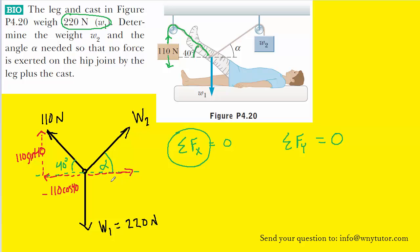The x-component points to the right and would be represented as w2 cosine of the angle alpha and then the y-component points upward and is equal to w2 times the sine of alpha. Those are both positive because the x-component points to the right and the y-component points upward.